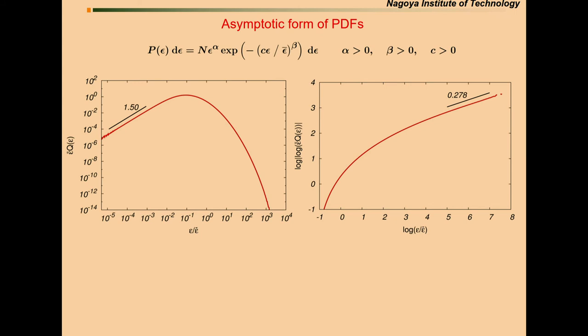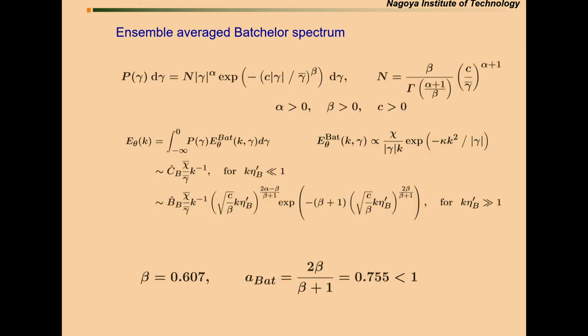Now, this is a similar plot, but for epsilon. For small epsilon, PDF obeys power law with exponent 1.50. The tail is 0.278. The point is that now, with the help of this DNS data, we assume that asymptotic PDF of gamma, like this one, pre-factor with exponent alpha and stretched exponential. Now, this functional form of PDF of gamma is the primary in this one. Now, we compute this integral by using steepest descent.